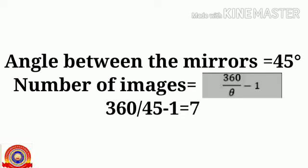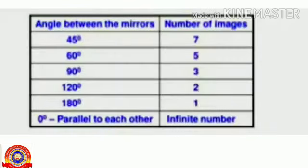This equation shows the relation between the angle between the mirrors and the number of images formed. For example, if the angle between the mirrors is 45 degrees, applying theta = 45 in the formula gives the number of images as 7. So 7 images are formed when the mirrors are arranged at an angle of 45 degrees. Using this formula we can find the number of images for different angles between the mirrors.